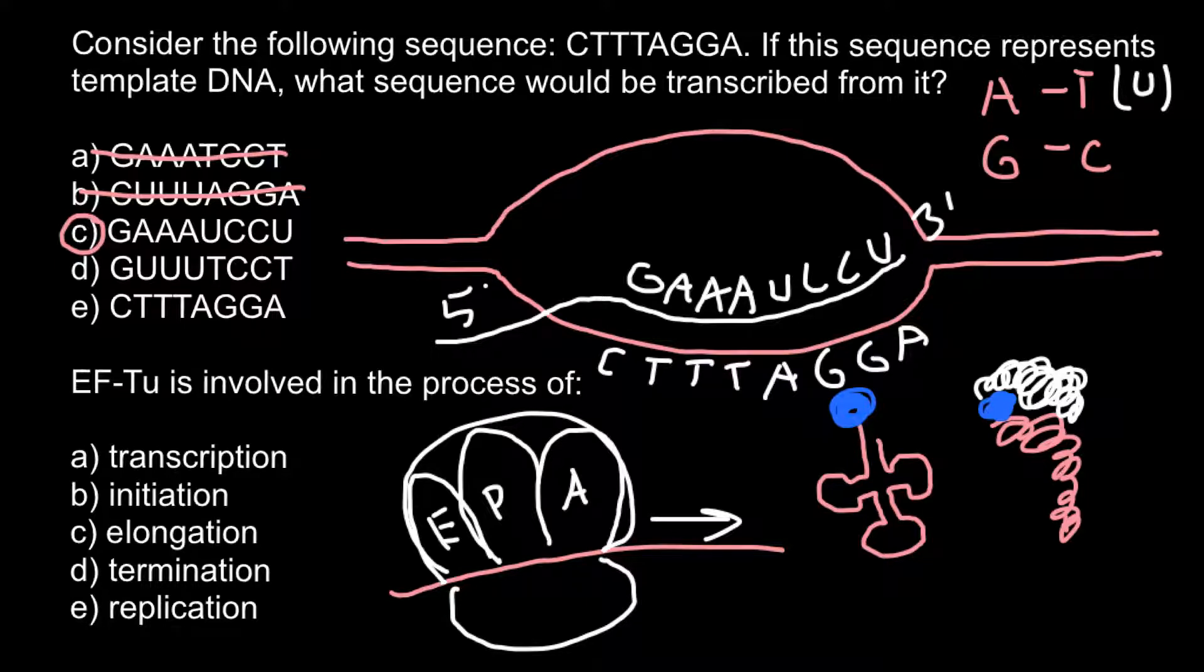These are needed for affinity with the large ribosomal unit A site. One such protein is the elongation factor thermounstable. This elongation factor can be found on top of the tRNA. As soon as tRNA takes place in the A site, this protein dissociates from tRNA.